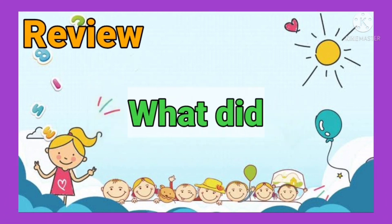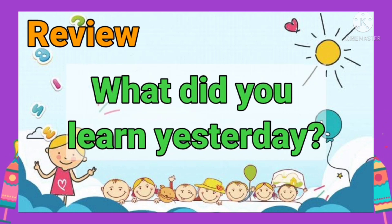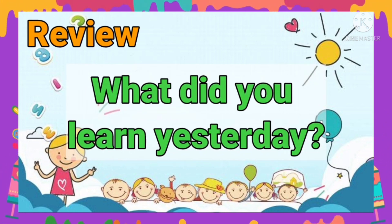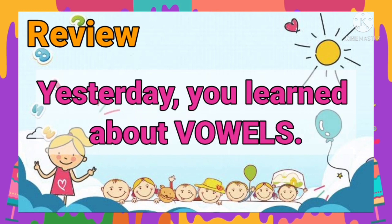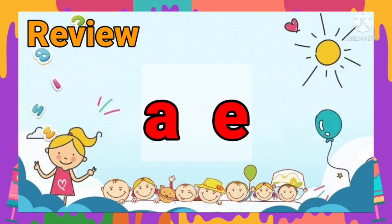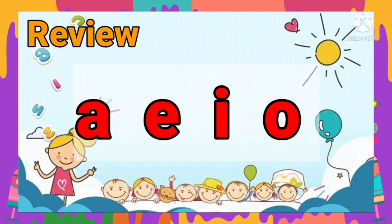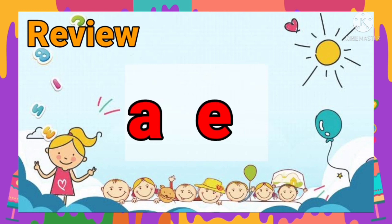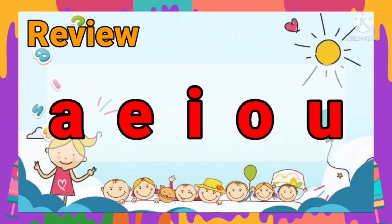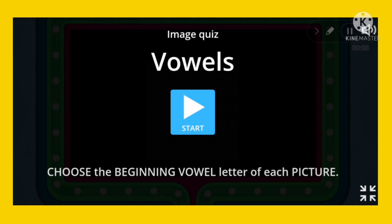It's review time. What did you learn yesterday? You are right — yesterday you learned about vowels. The vowels are letter A, letter E, letter I, letter O, and letter U. Please read after me: A, E, I, O, U. And these are the vowel letters. Great job, kids!